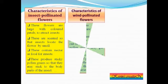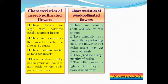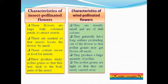The characteristics of wind-pollinated flowers: since insects are not involved, the flowers are usually very small and dull in color — not attractive. They generally have long anthers protruding out of the flower so that pollen grains may get blown off easily. Since the pollen grains don't always fall on the stigma, it is a wasteful process, so a large quantity of pollen grains are produced.